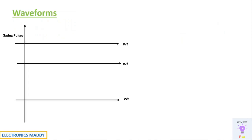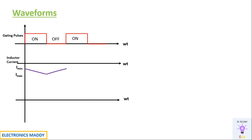This is very important: Vout is always positive and current I is always negative. This helps us analyze the output waveforms. Looking at the gating pulses — when the switch is on and when it is off — the inductor current starts increasing in the negative direction from I-minimum. At some point the stored energy discharges and the current decreases back to I-min, repeating each cycle.